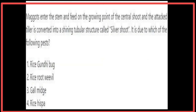When a maggot enters the stem and feeds on the growing part of the central shoot, the affected tiller is converted into a shining tubular structure called a silver shoot. This symptom of damage is related to the gall midge pest.